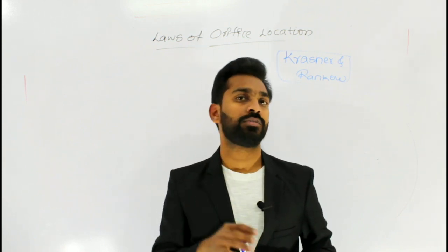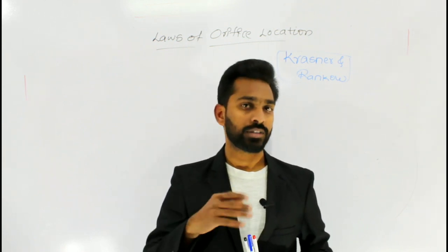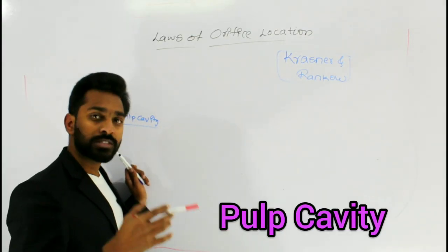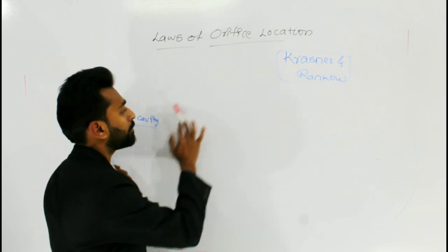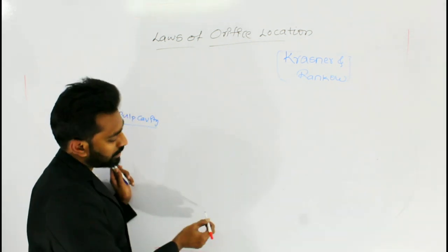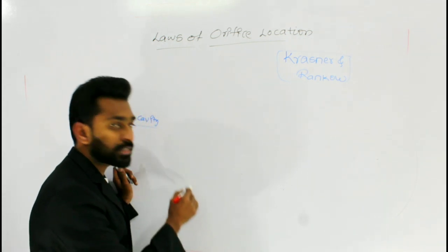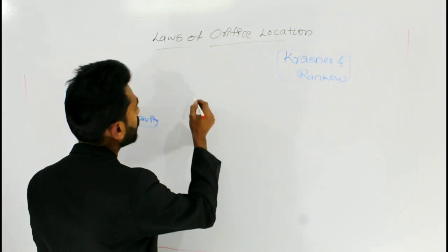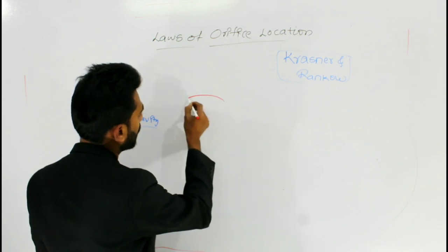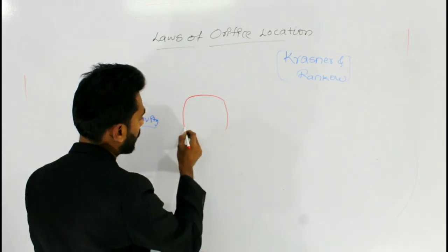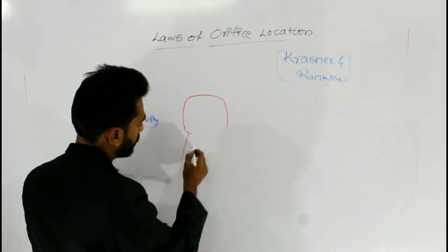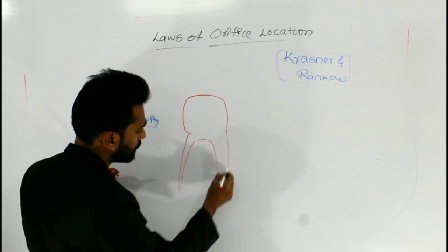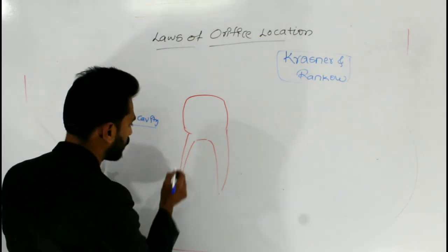Before starting the law of centrality, I would like to describe briefly about the pulp cavity and its divisions. The pulp cavity is an enclosed space present in the tooth which is surrounded by dentine all over, except at the apical foramen through which blood vessels and nerves enter. The pulp cavity is a central cavity present in the tooth, enclosed by dentine all over.